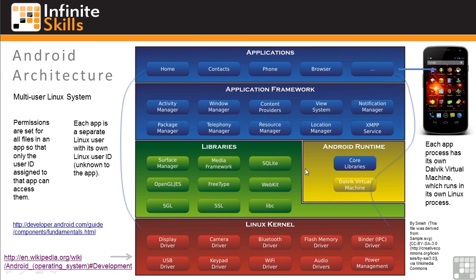Each app process has its own Dalvik virtual machine instance, which runs in its own Linux process. One major aspect of this architecture is that each application is protected from other apps. There are ways for apps to communicate with each other, but unintentional cross-app damage is avoided. I've included a link to the wiki article explaining this diagram and a link to the page on the Android developers website about app fundamentals.